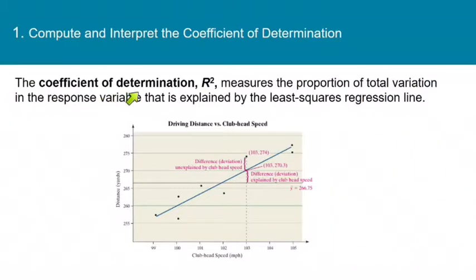The coefficient of determination is denoted by r squared, and it measures the proportion of the total change in the response variable that can be explained by the least squares regression line. Now I know that all sounds very technical and hard to deal with, but it's really not. Just hang with me for just a minute.